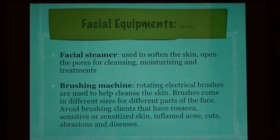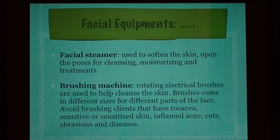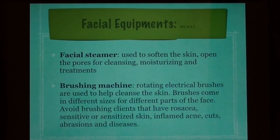Facial equipment — facial steamer: used to soften the skin and open the pores for cleansing, moisturizing, and treatments. Brushing machine: rotating electrical brushes used to help cleanse the skin; brushes come in different sizes for different parts of the face. Avoid using the brushing machine on clients with rosacea, sensitive or sensitized skin, inflamed acne, cuts, abrasions, or diseases.